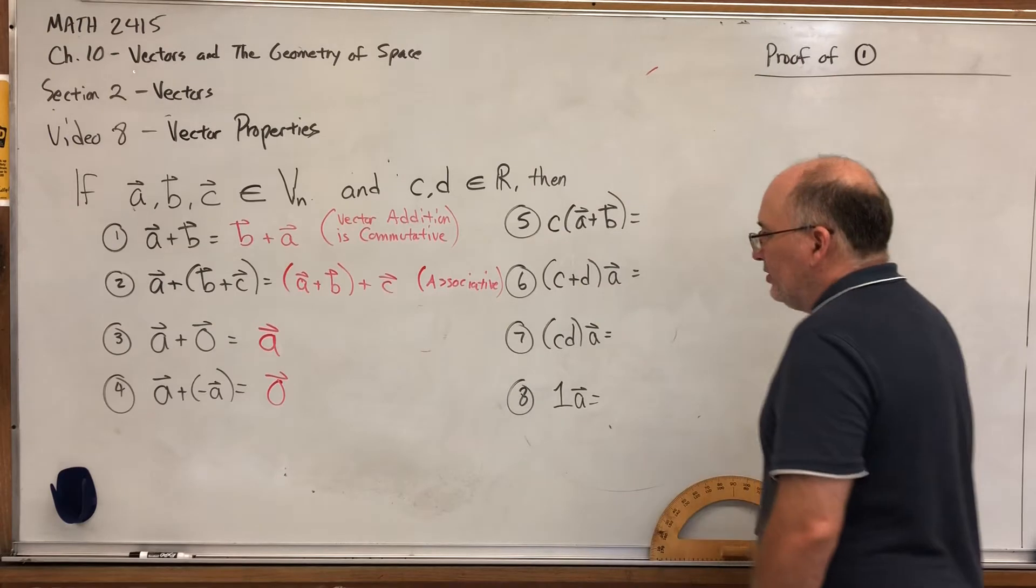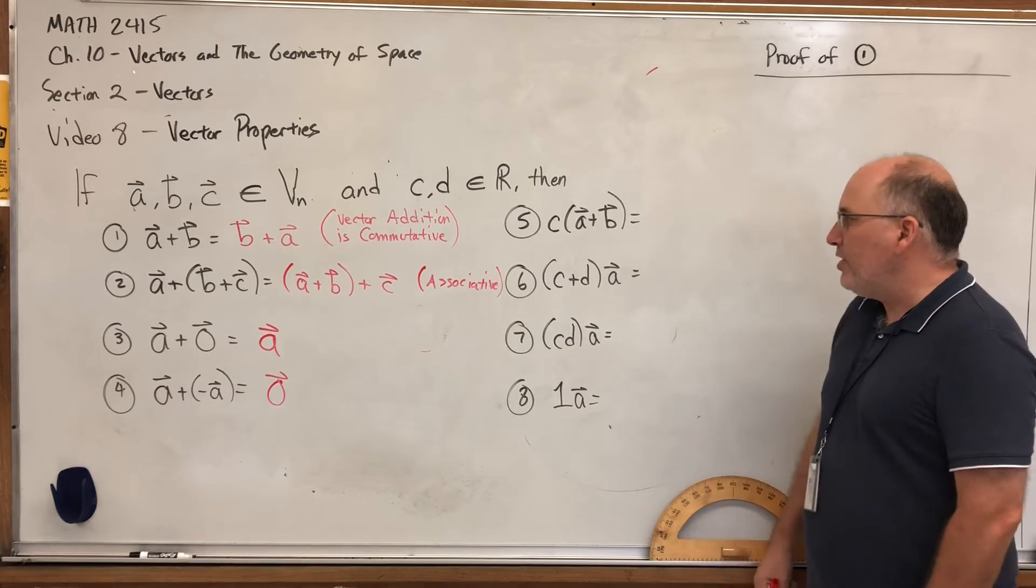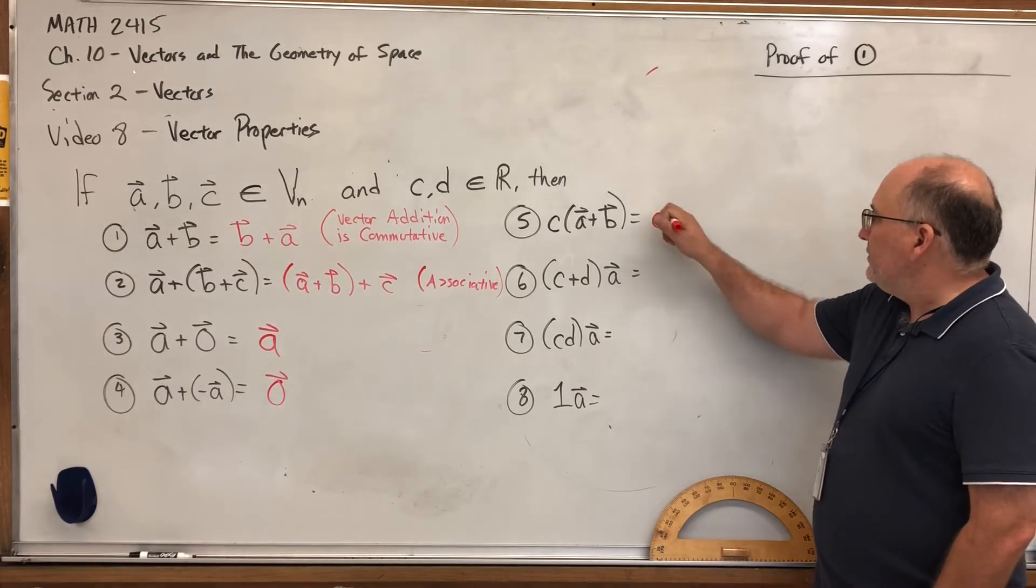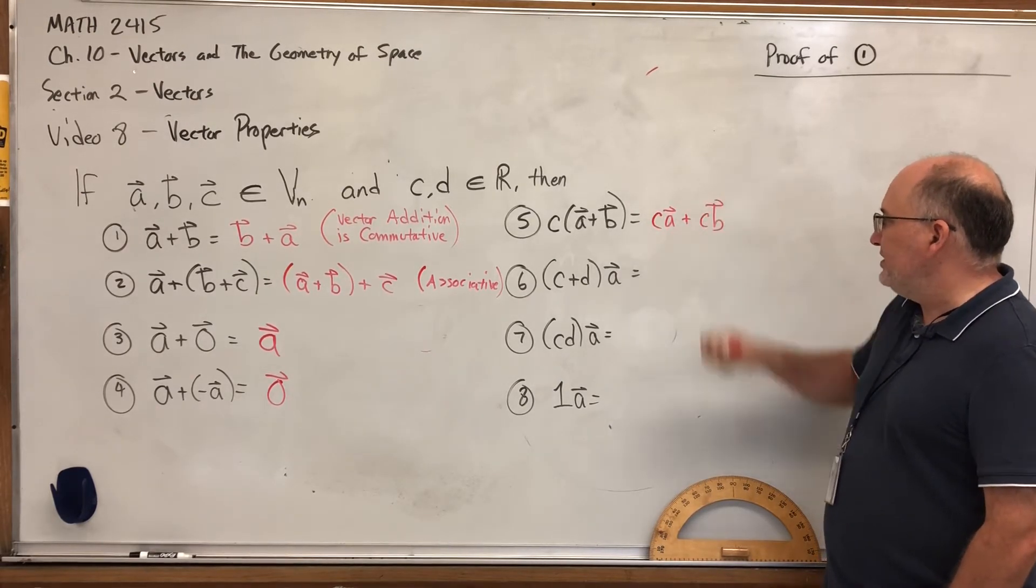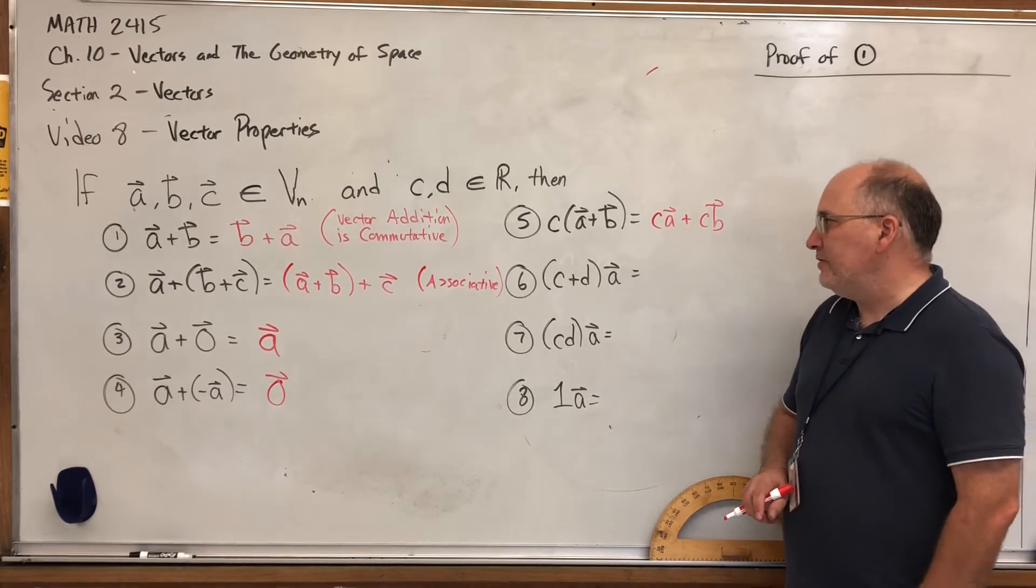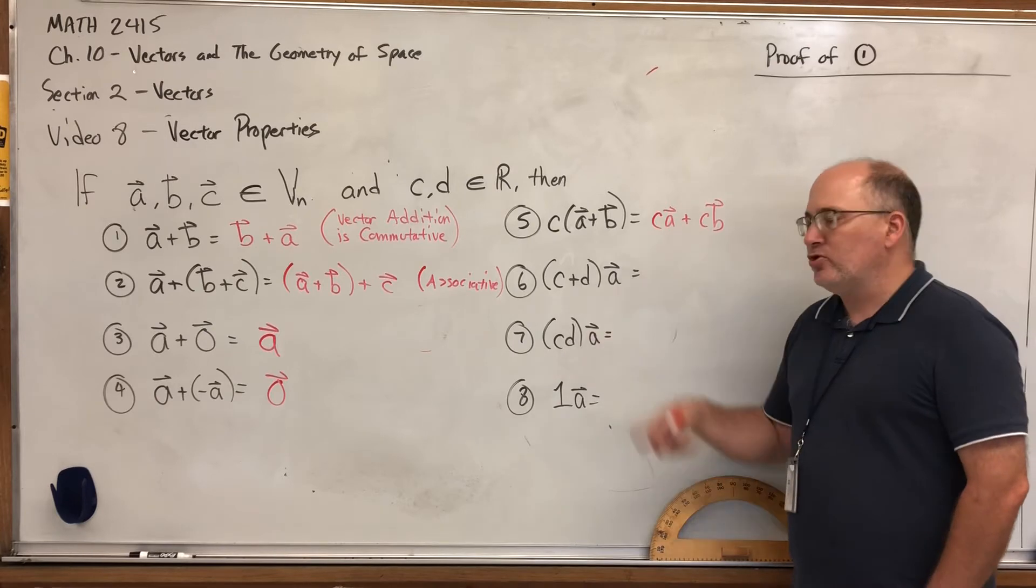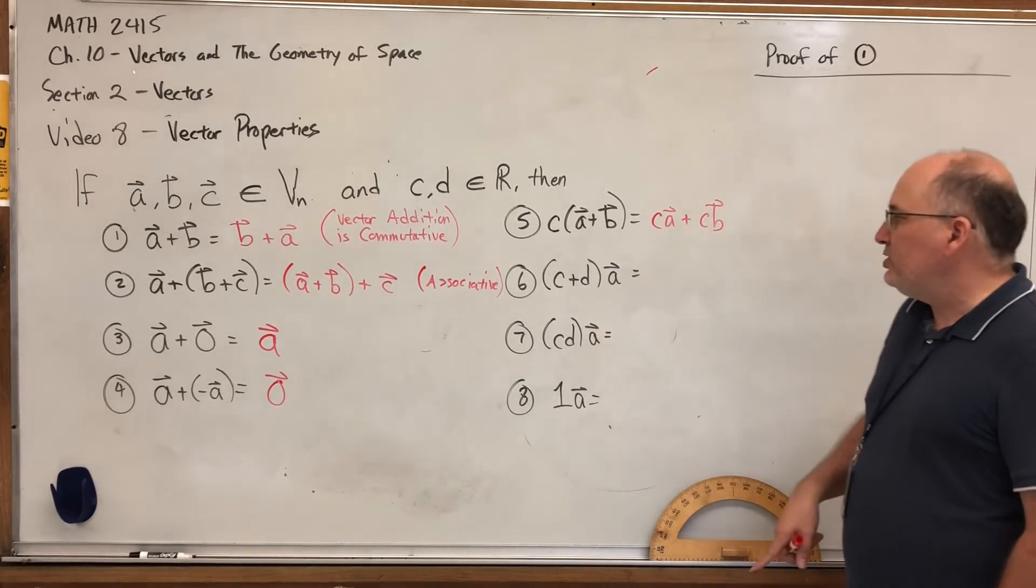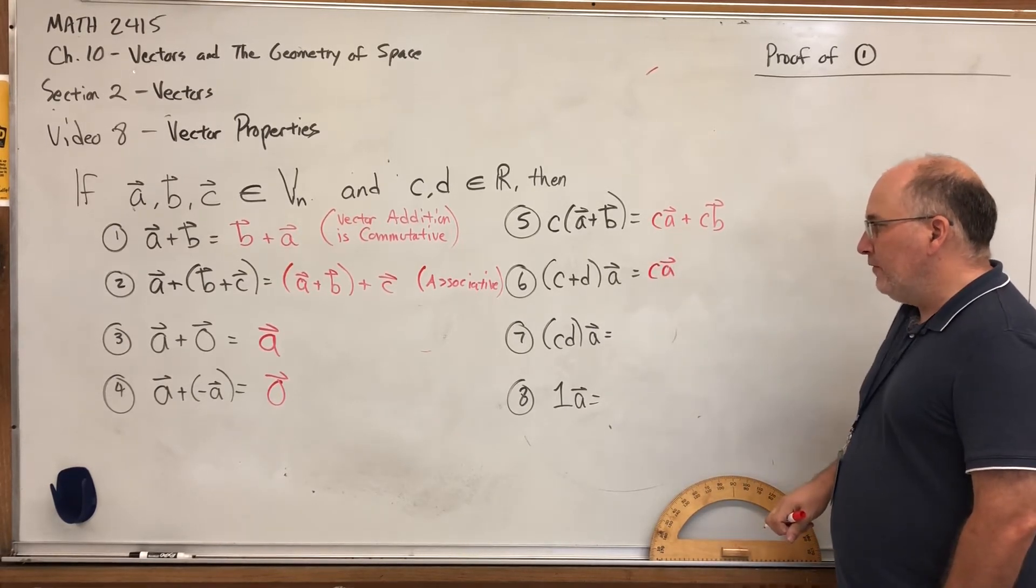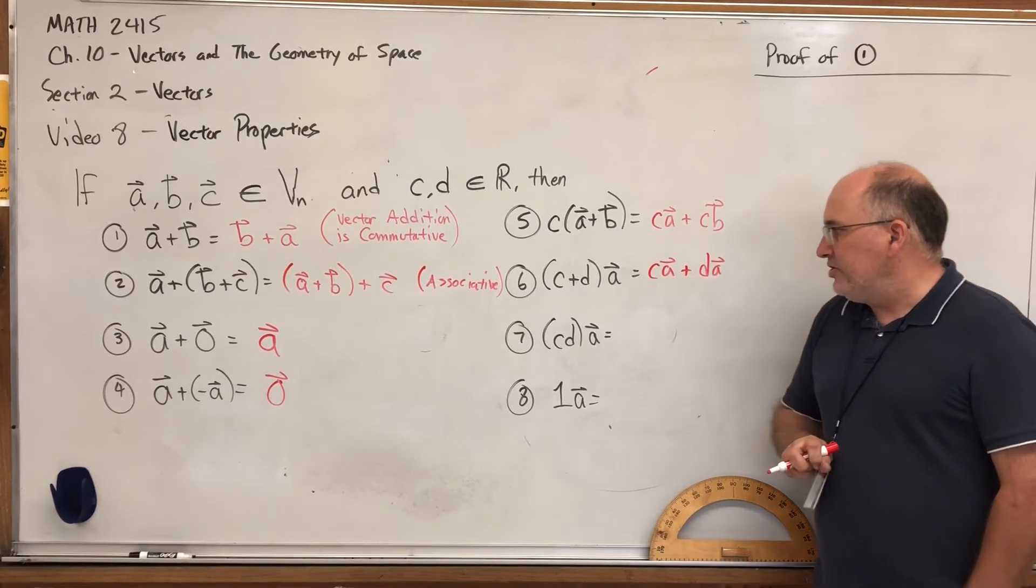Five, six, seven, and eight involve scalars. Five says if you take a scalar C and multiply it times the sum of two vectors, well, what do you think you can do? It looks like you can distribute, and you can. To find C times A plus B, you can just do C times A plus C times B. Sixth is also a distributive property, but instead of distributing scalar multiplication across vector addition, you're distributing scalar multiplication across scalar addition. In other words, if you add two scalars and then multiply them times a vector, you can distribute and say, well, let me take the first scalar multiple of the vector plus the second scalar multiple of the vector. In other words, it looks like you can distribute, and you can.